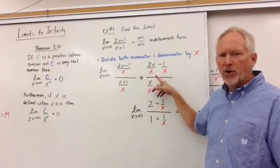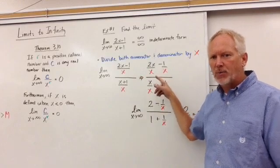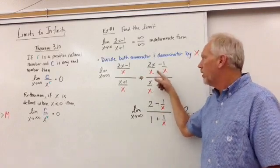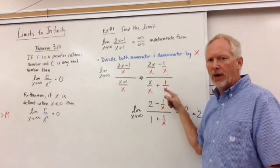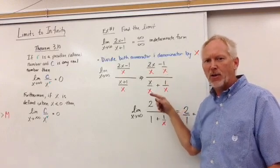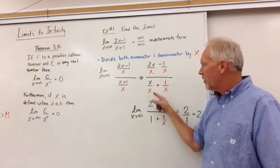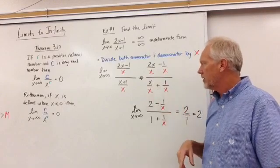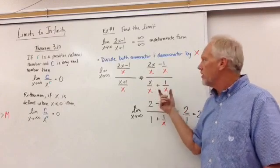So what we do, 2x minus 1 divided by x, and x plus 1 divided by x. Now, algebraically, we can split those apart. They have the same denominators, but we split them apart. 2x minus 1, or 2x over x minus 1 over x.